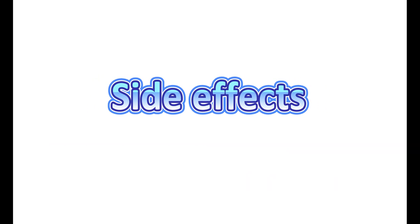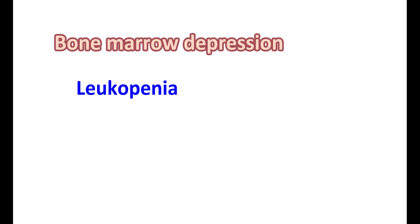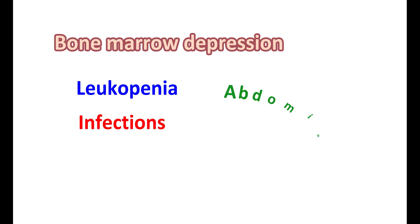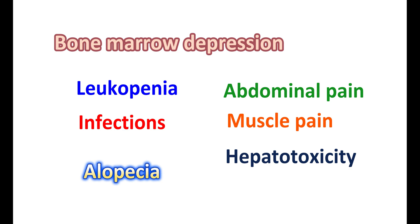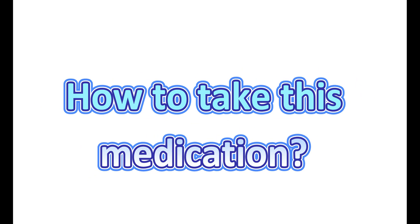The side effects of azathioprine include bone marrow depression resulting in leukopenia, and increased risk of infections. Other side effects include abdominal pain, muscle pain, and hepatotoxicity. Joint pains may also be observed in some people. Nausea and vomiting are common side effects. Azathioprine can also produce alopecia — loss of hair.